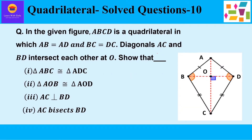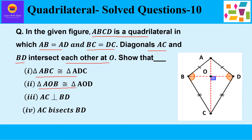This is the question we are going to take up in this video. In the given figure, ABCD is a quadrilateral in which AB is equal to AD and BC is equal to DC. Diagonals AC and BD intersect each other at O. Show that triangle ABC is congruent to triangle ADC, triangle AOB is congruent to triangle AOD, AC is perpendicular to BD, and AC bisects BD.